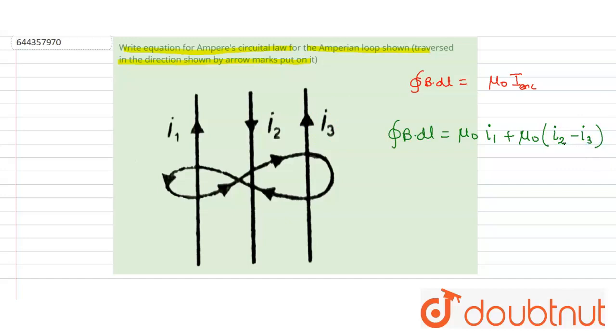So if we solve, B dot dl will be equal to mu not i1 plus i2 minus i3.